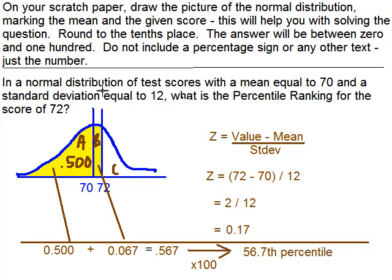So in a normal distribution of test scores with a mean of 70 and a standard deviation of 12, what is a percentile ranking for a score of 72? Percentile ranking is the percentage of people who scored below. We knew that area A was half the distribution because it's below the mean. Half people are below, half are above.